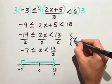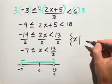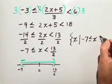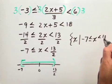The set builder notation will be the set of all x such that negative 7 is less than or equal to x is less than 13 halves.